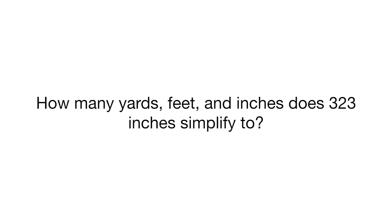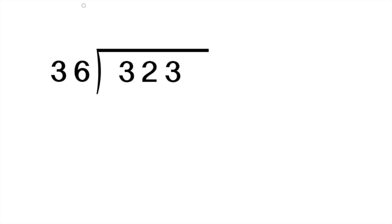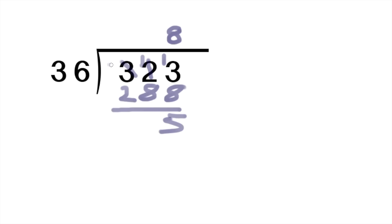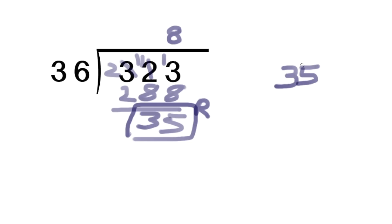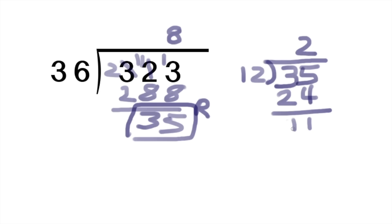Now for something a little bit trickier: simplify 323 inches into yards, feet, and inches. To find yards, we divide by 36 inches. That gives us 8 with a remainder of 35. One yard is 36 inches — that goes into 323 eight times, leaving a remainder of 35. Now we divide 35 by 12 to find how many feet are left over, and it looks like 2, with 11 inches still remaining. So our answer is 8 yards, 2 feet, and 11 inches in 323 inches.